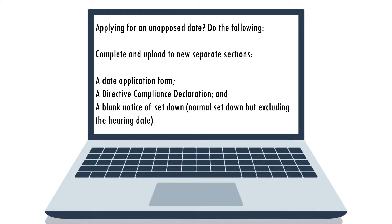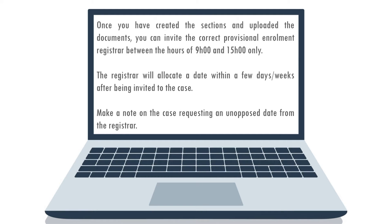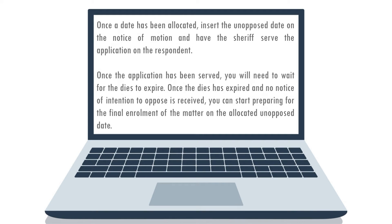If you watched our previous episode, you would know how to apply for an unopposed date. As a reminder, you'll need to complete and upload to new separate sections: a date application form, a directive compliance declaration, and a blank notice of set down — which is a normal setdown but excluding the hearing date. Once you have created the sections and uploaded the documents, you can invite the correct provisional enrollment registrar. Remember that the registrar must be invited between the hours of 9 and 3 PM only. The registrar will allocate a date within a few days or a week. Once a date has been allocated, insert the unopposed date on the notice of motion and have the sheriff serve the application on the respondent.